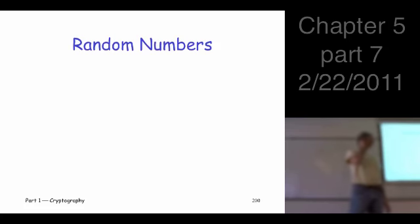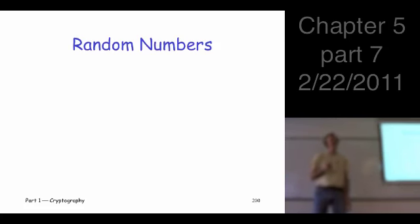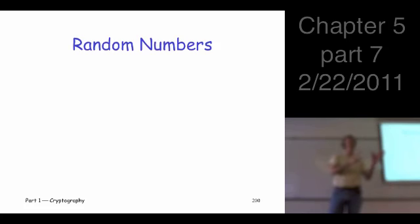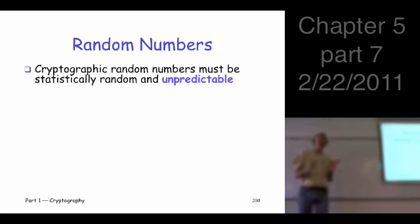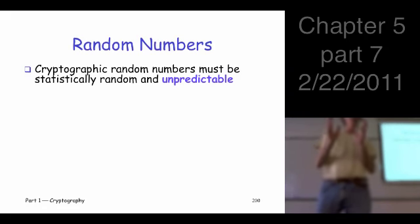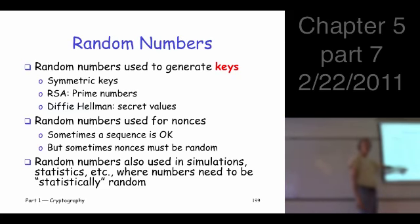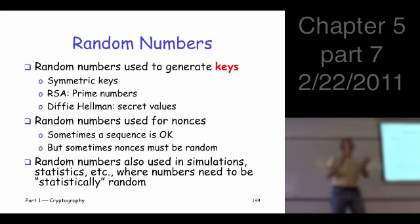The key word I'm looking for is unpredictable. They need to be unpredictable. If you look at the techniques used to generate random numbers — your random number generator in whatever your favorite programming language is — it is very, very predictable. If you give me a sequence of numbers that you produce with it, I can tell you what's going to come next, and all the rest of the numbers after that. It's very predictable.